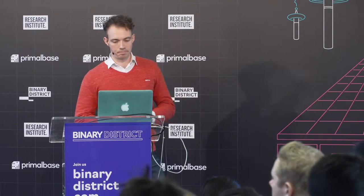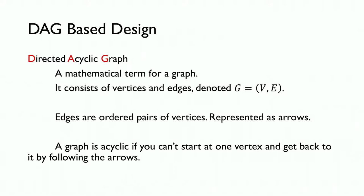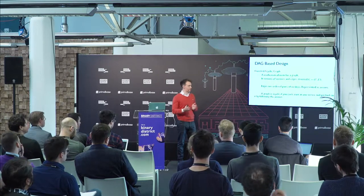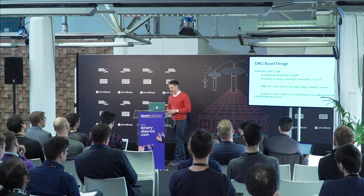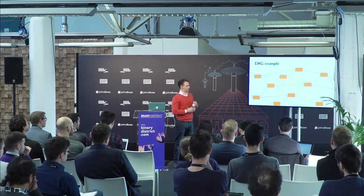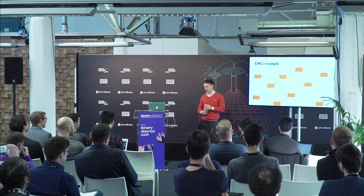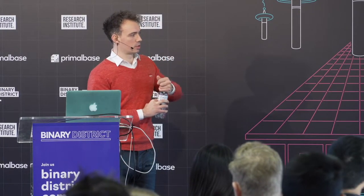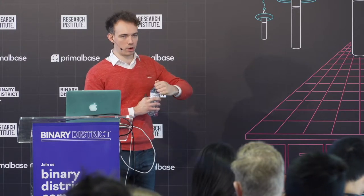A DAG-based design — first, what do we mean by DAG? We mean a directed acyclic graph. This comes from the mathematical term for a graph, which generally consists of two sets: vertices and edges. Edges are just ordered pairs of vertices, and they're normally represented as arrows if you have a directed graph. A graph is acyclic if you can't start from one vertex and get back to it following the arrows. That's an example of a DAG — edges as arrows, and vertices as the orange boxes. You can see by inspection that there are no cycles.